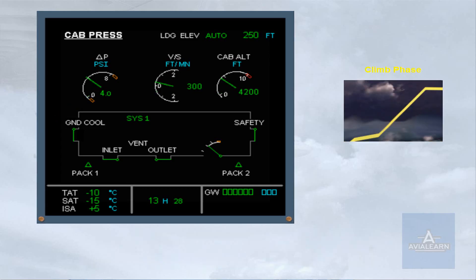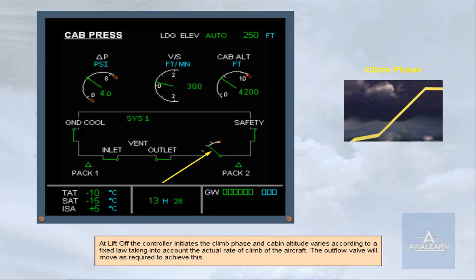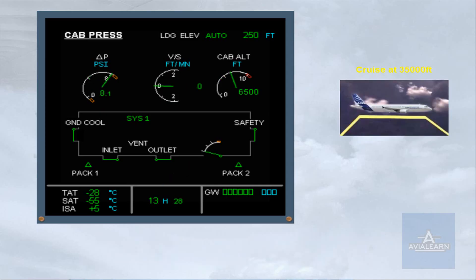At liftoff, the controller initiates the climb phase and cabin altitude varies according to a fixed law, taking into account the actual rate of climb of the aircraft. The outflow valve will move as required to achieve this. Once established in cruise, the cabin altitude and differential pressure will remain steady. The outflow valve will move as required to maintain the cabin altitude.